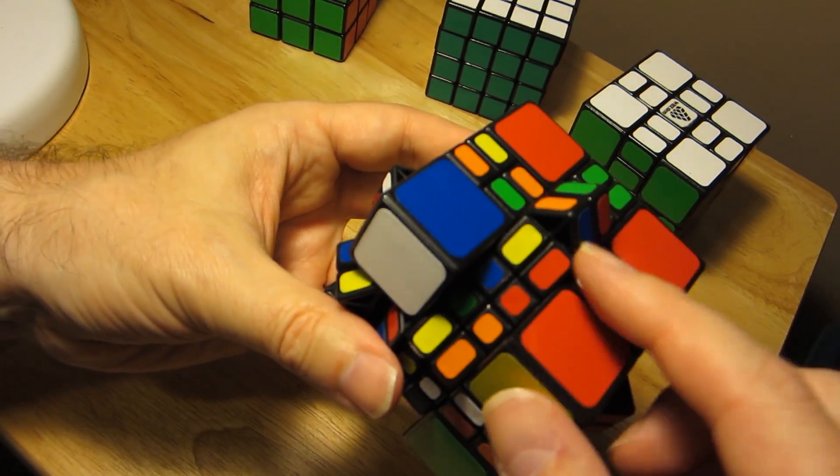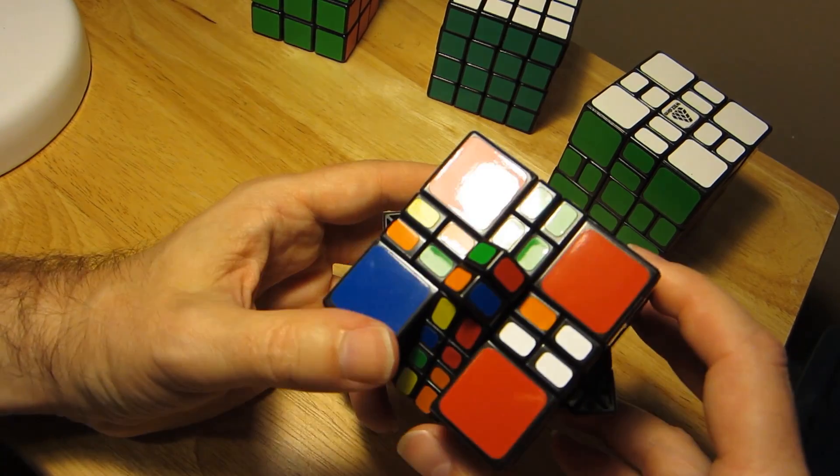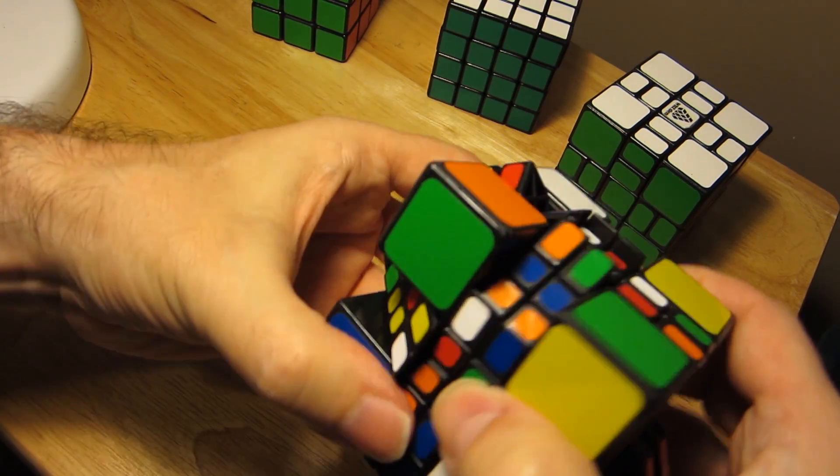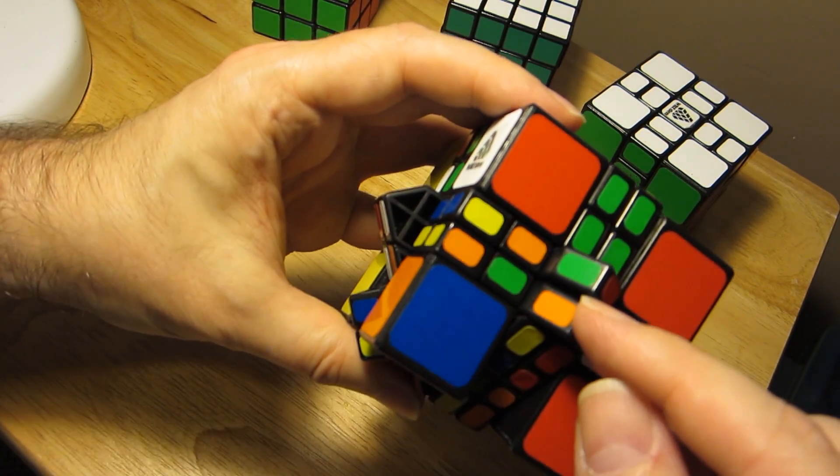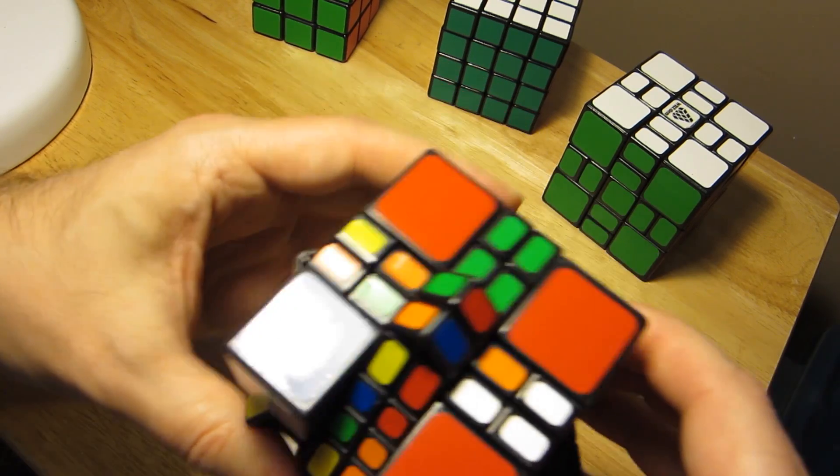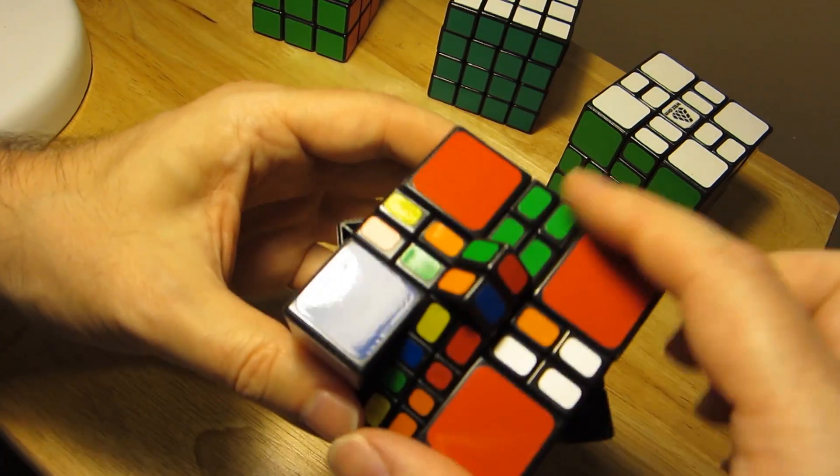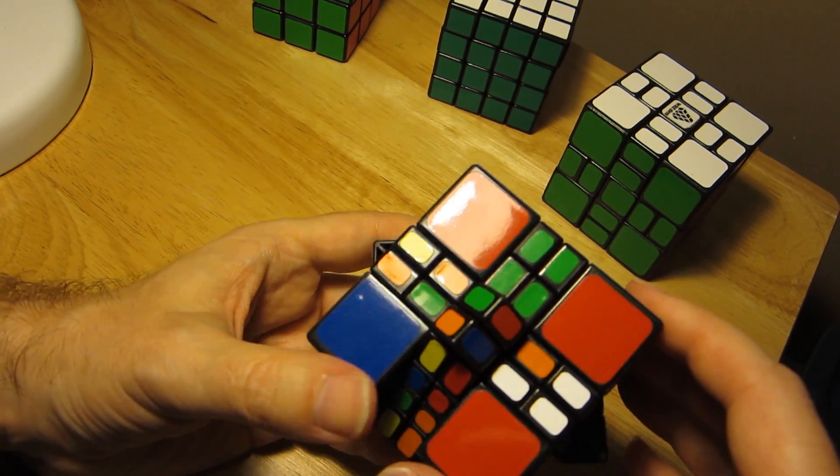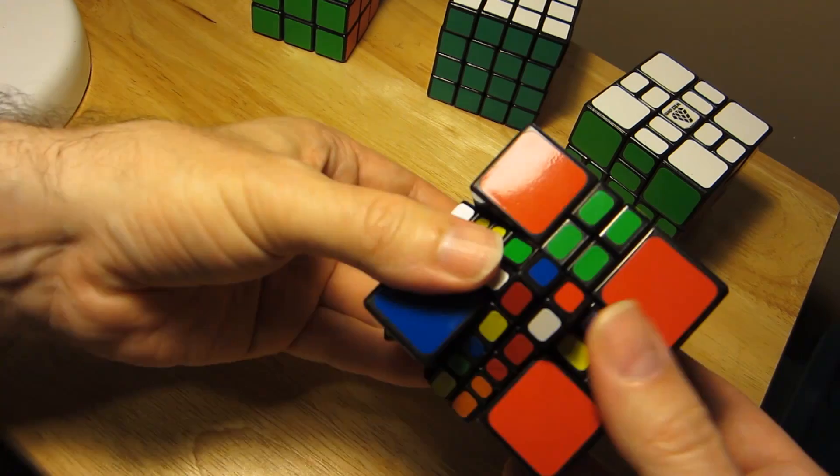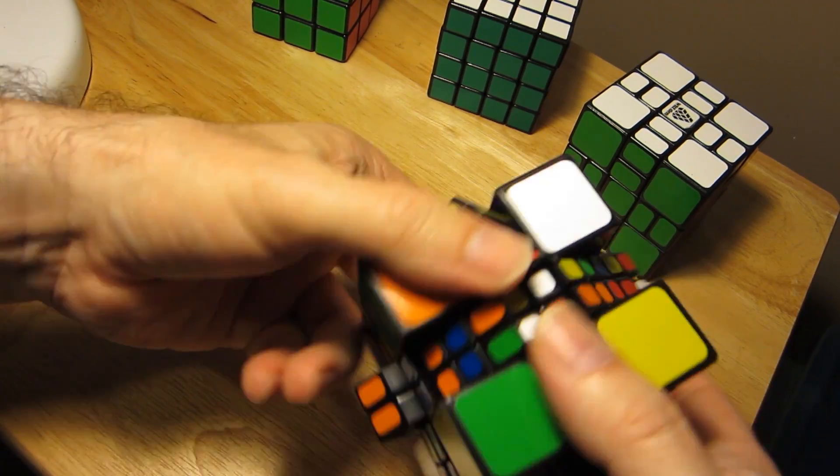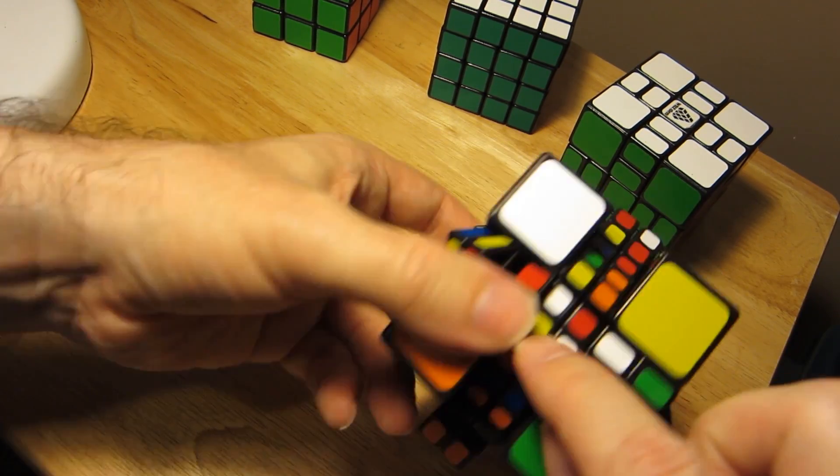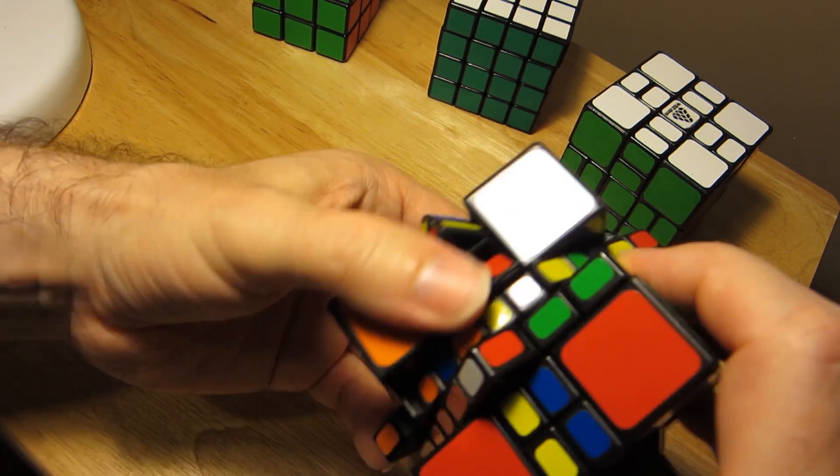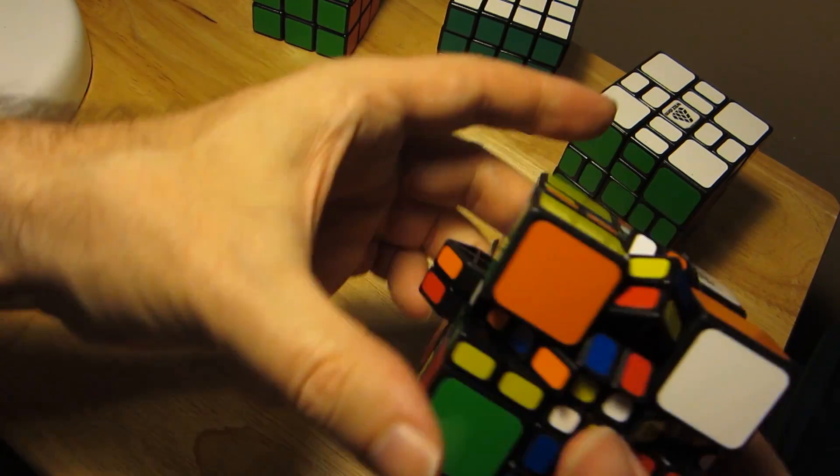Now, this is a unique feature of the Mixup Plus 4x4—it can get locked up and you can't turn it anymore because the edges have an orientation that will block the middle layer or the inner layer from turning. We can actually solve that by just doing an E turn, or whatever it would be called, and making sure that all of the edges are lined up so that we can freely rotate the layers.